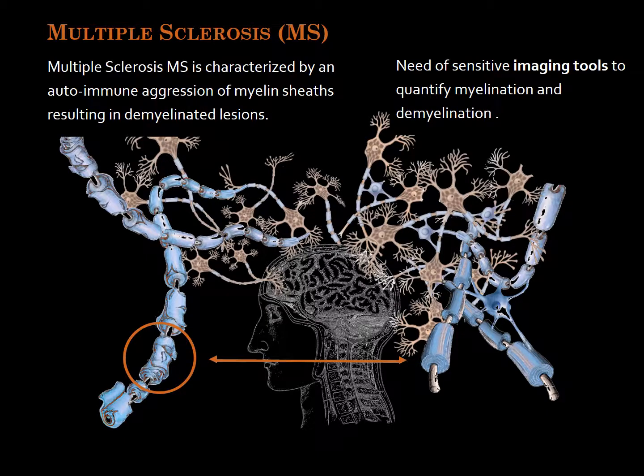MS is a pathology characterized by an autoimmune aggression of myelin sheath resulting in demyelinated lesions. Myelin is a wide fatty sheath that surrounds the long neuronal axon, forming an electrically insulated layer which increases the speed of neuron signal propagation. When myelin degrades, conduction of signal along the nerve can be impaired or lost.